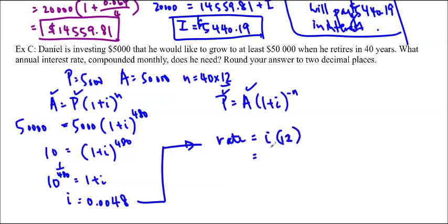And, so, if we do that, we get approximately 5.8% per annum. So, that is our answer.